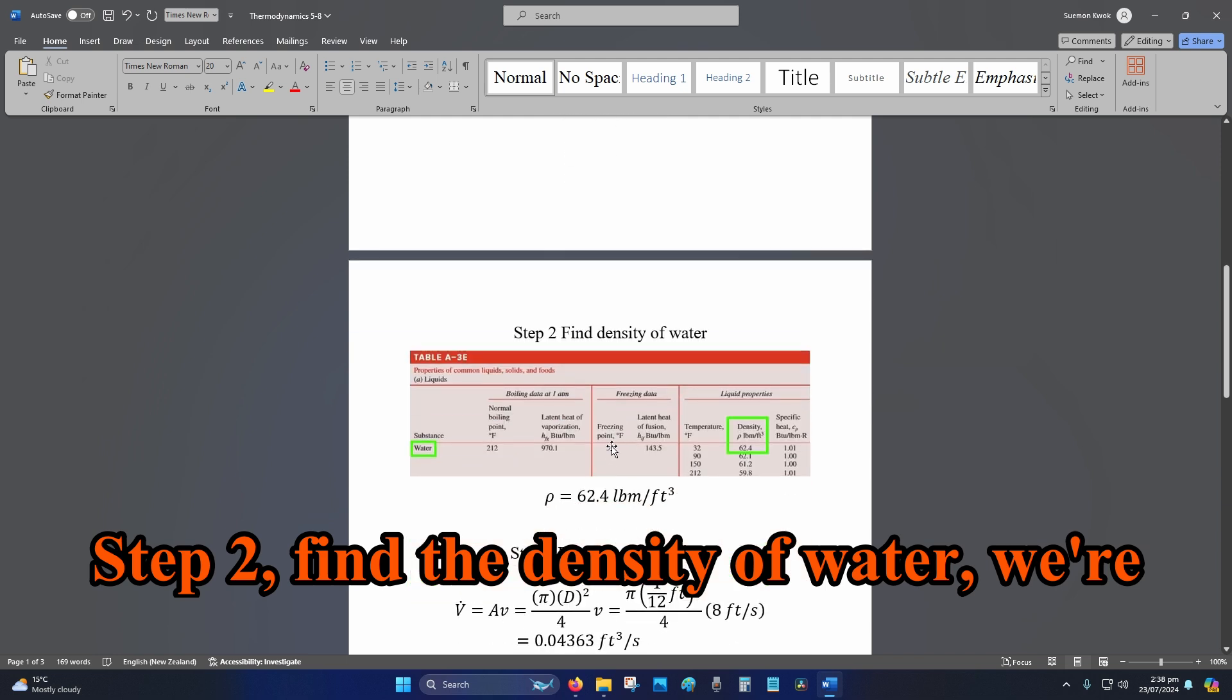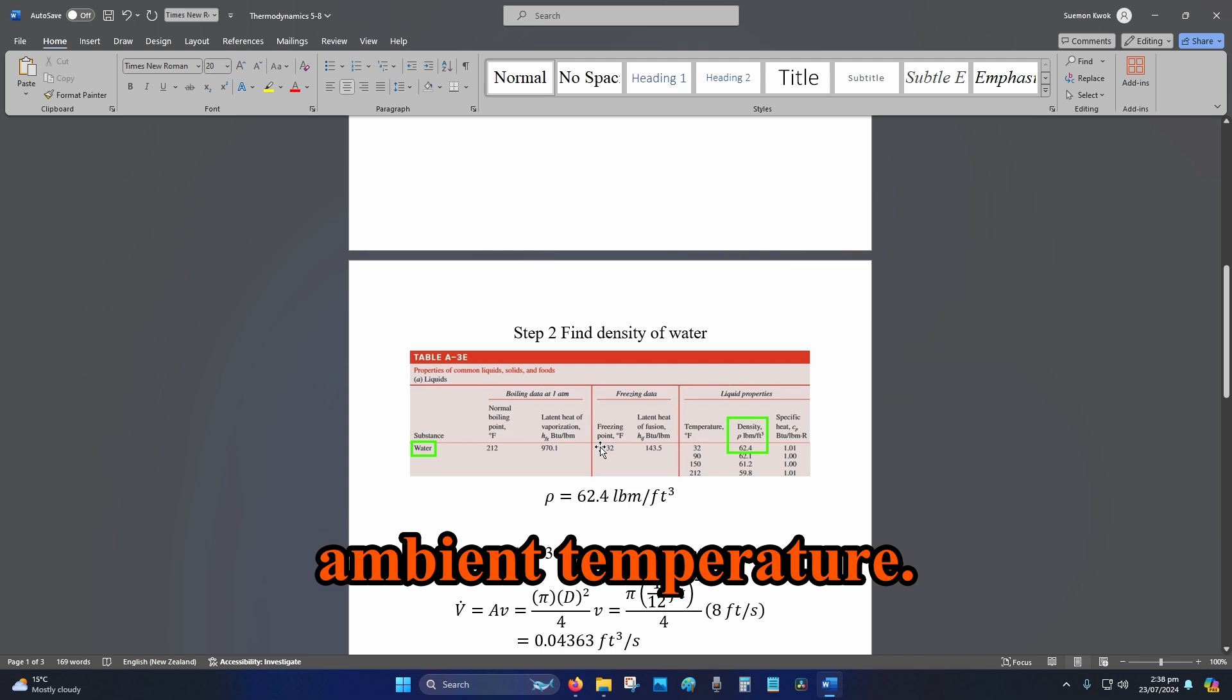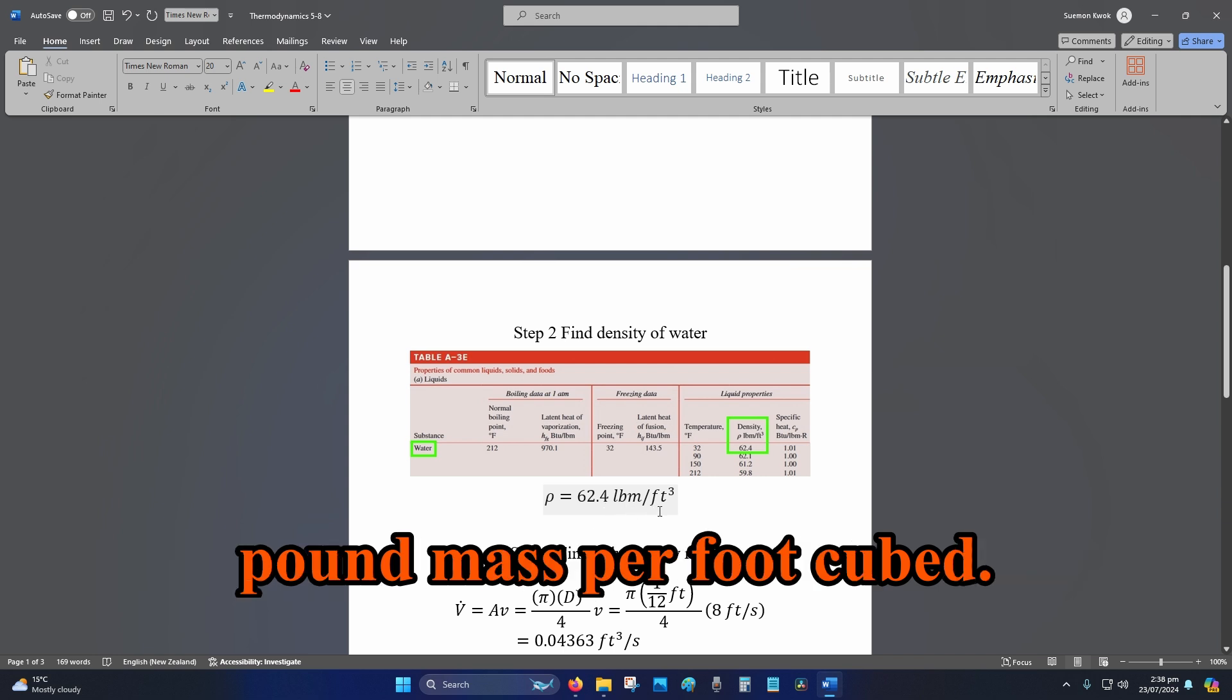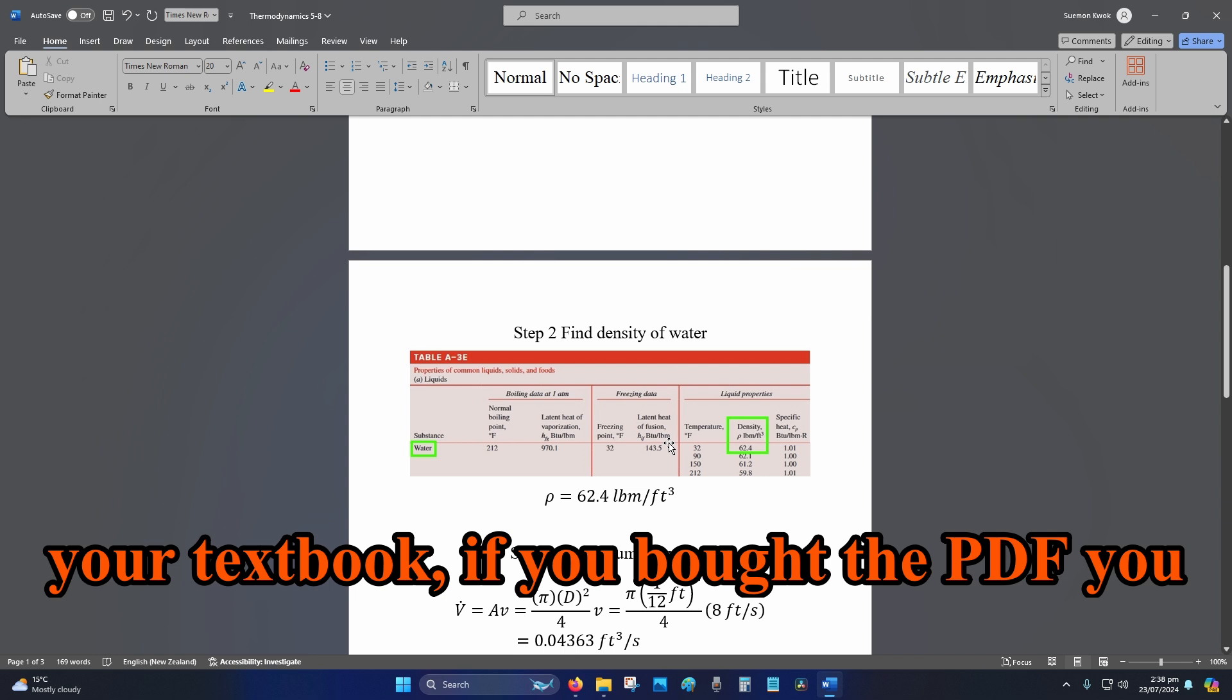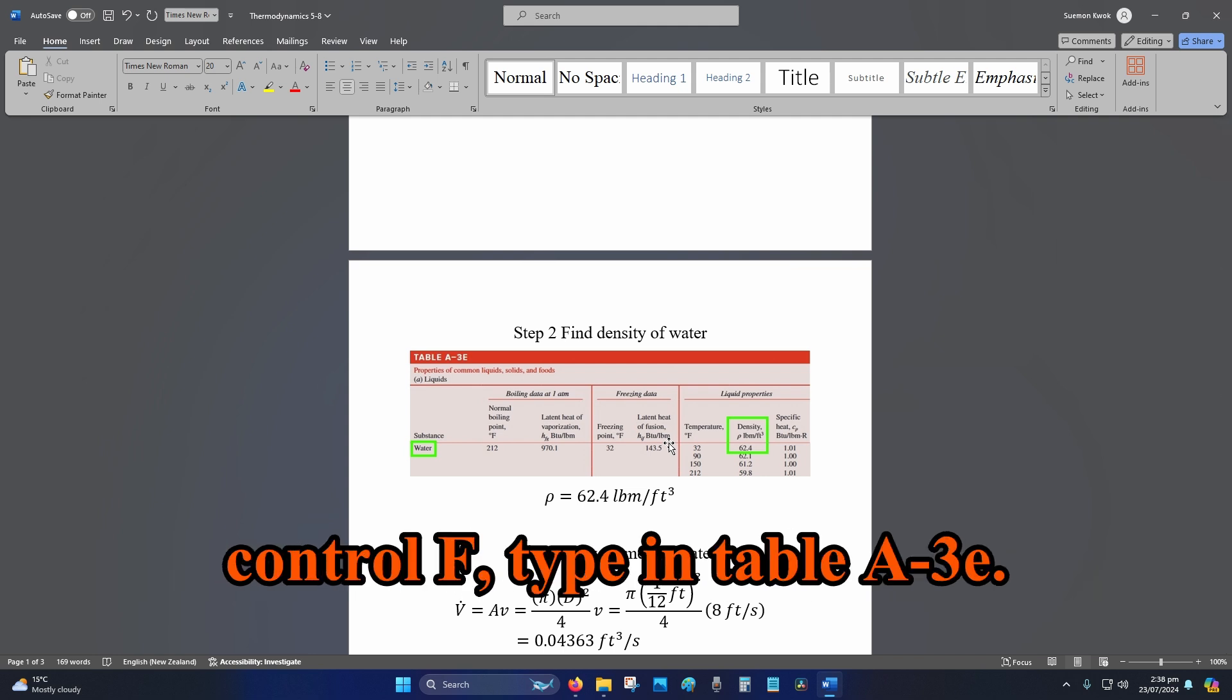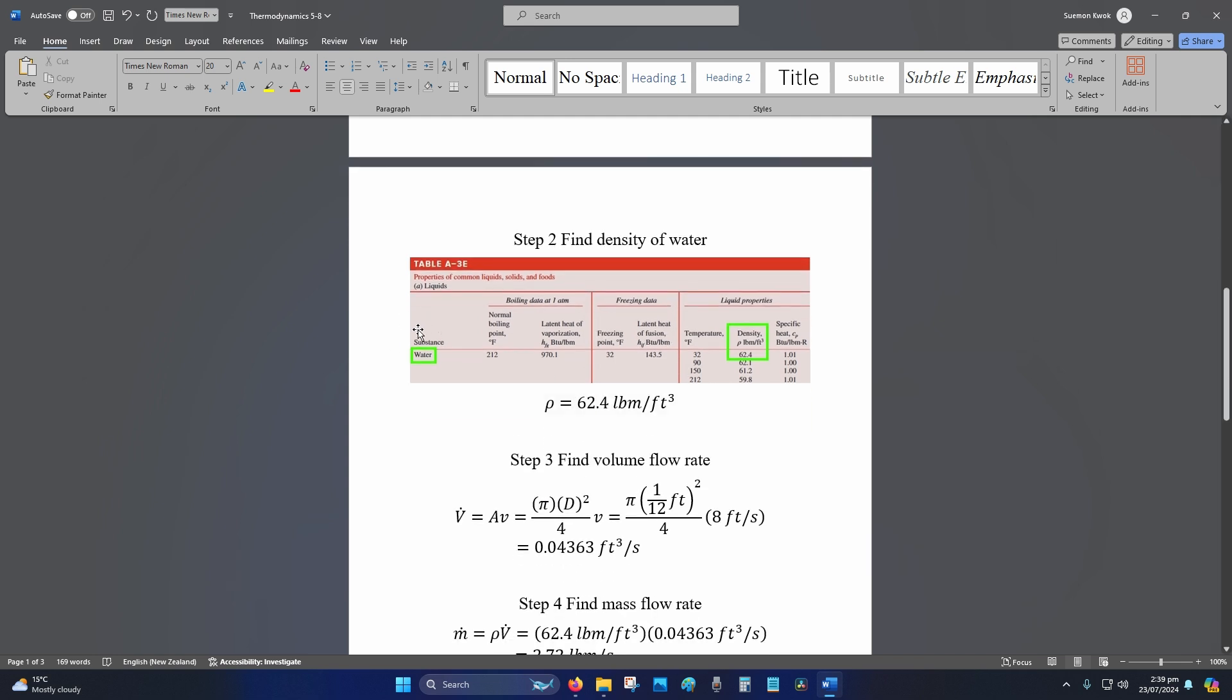Step 2, find the density of water. We're going to assume that it's just your ambient temperature. So the density of water will be 62.4 pound mass per foot cubed. You can find this table at the back of your textbook. If you bought the PDF, you can use your search function, Control F, type in table A-3E.